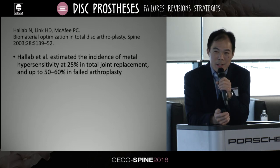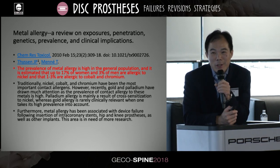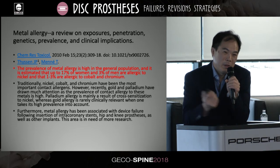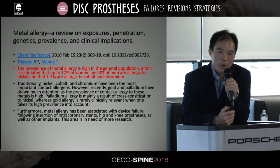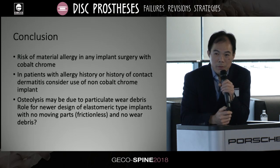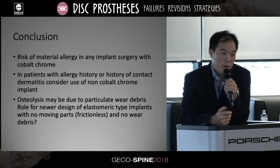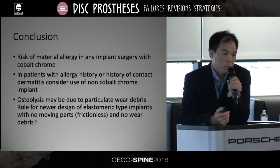I always ask patients now whether they are allergic to any metal before placing a metallic prosthesis. So far I haven't seen any titanium allergy. In the general population, possibly up to 17% of women and 3% of men are allergic to nickel, and 1 to 3% may be allergic to cobalt and chromium. I ask patients if they get a rash on their wrist from a metal watch in summer. Possibly switching to elastomeric implants may help, as they don't generate wear debris.